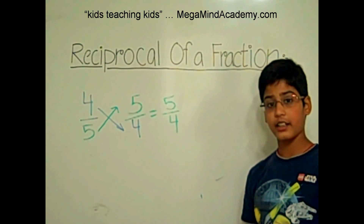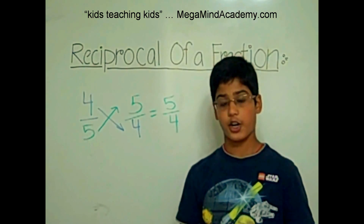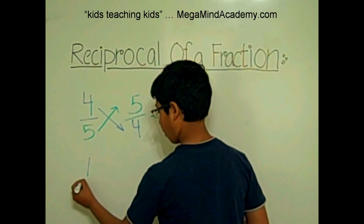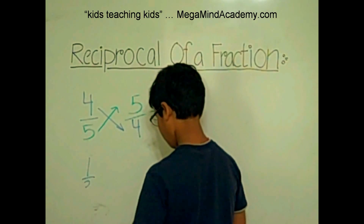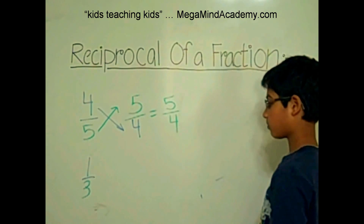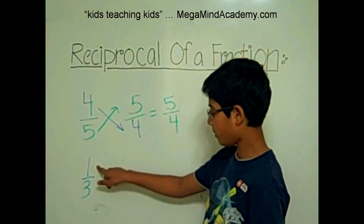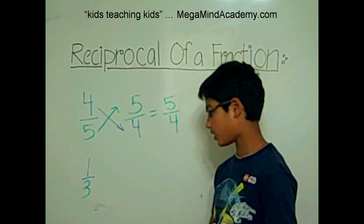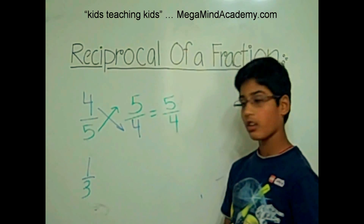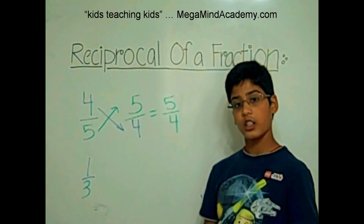So, let's say that we have to find the reciprocal of 1 third. 1 over 3. Now, in 1 third, 1 is the numerator, because it is on top of the fraction line, or over the fraction line, and 3, which is in the green color, is under the fraction line.